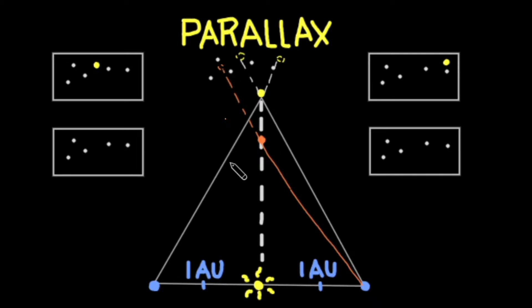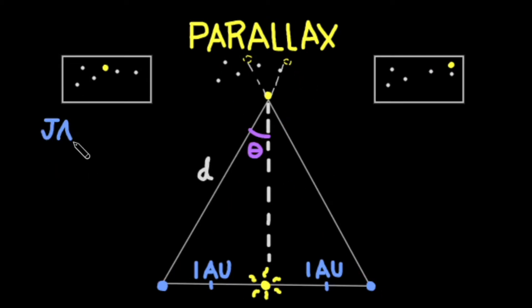The closer the star is to our solar system, the more it will seemingly move against the background stars. If we compare where a star is on an image one month relative to where it is six months later, when the Earth is on the other side of the Sun, we can measure a parallax angle.